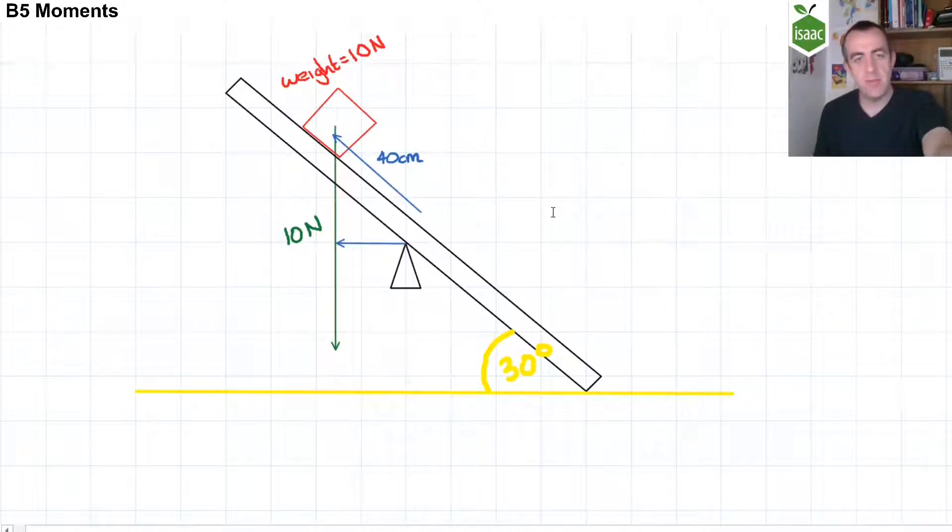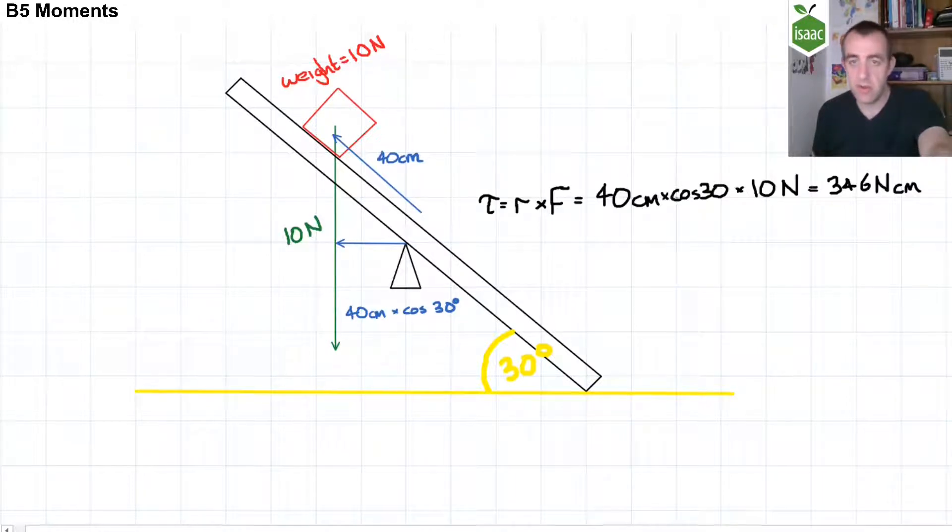Well, now the perpendicular displacement from the pivot to the line of action of the force is no longer 40 centimetres. The 40 centimetres is the hypotenuse, and so this perpendicular displacement from the pivot to the line of action of the force is 40 centimetres multiplied by the cosine of 30 degrees, which is approximately 346 newton centimetres of moment.